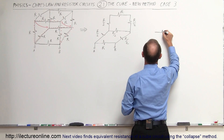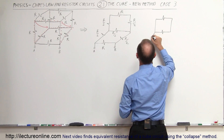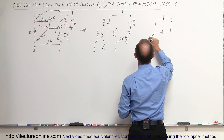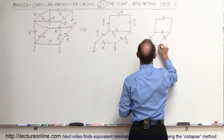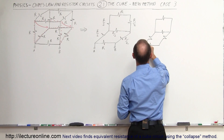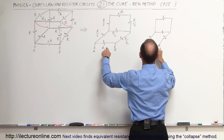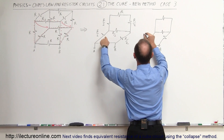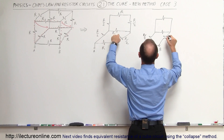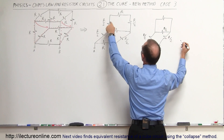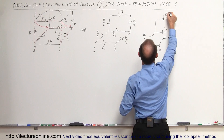Now we still have this resistor, one single equivalent resistance for the back path, plus the remaining resistors. This is still A, this is still B. This resistor is still R, these are R/2, this one is R/2, and the combined back path is 2R.